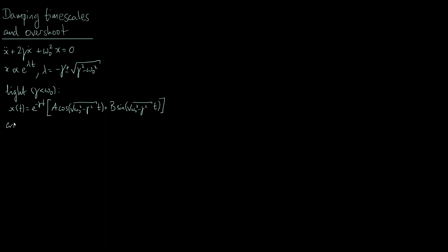The critical case is when gamma is exactly equal to omega-naught. The solution looks like e to the minus gamma t, multiplied by some constant A-prime plus another constant B-prime times time. Note the primes just indicate these constants are different from those in the previous solution.